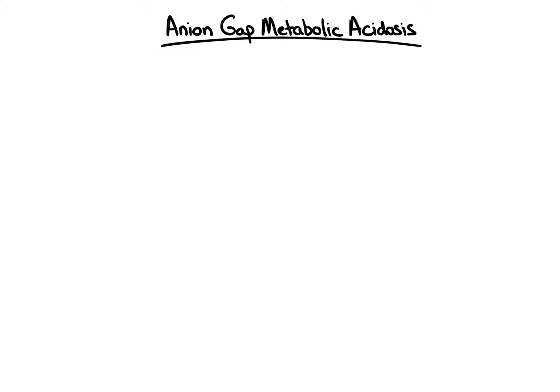Let's start by talking about anion-gap metabolic acidosis. If you have identified a metabolic acidosis in your patient, the next step is to calculate whether an anion-gap is present. The anion-gap is calculated by taking sodium, a cation — meaning it's positively charged — and subtracting the major anions, meaning negatively charged, chloride and bicarbonate. An abnormal anion-gap is generally greater than or equal to 12.